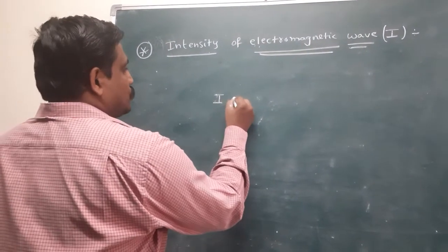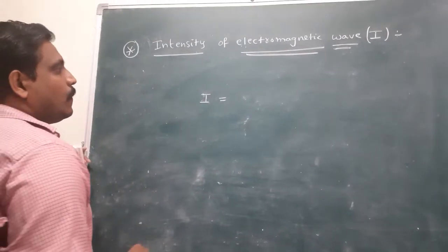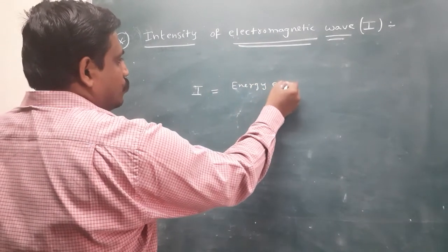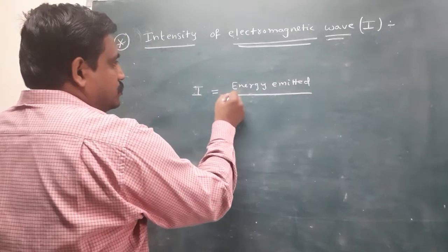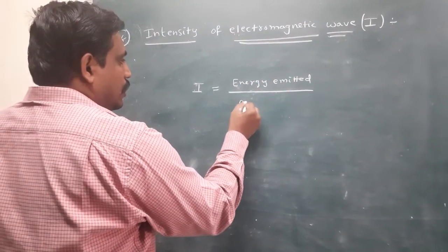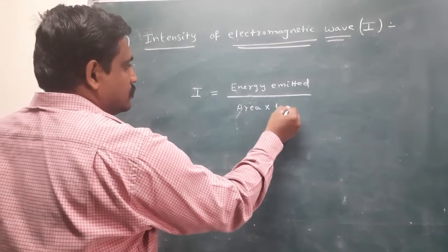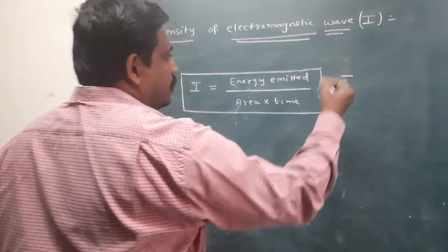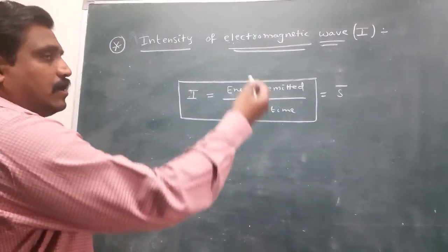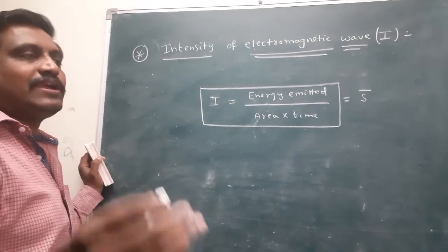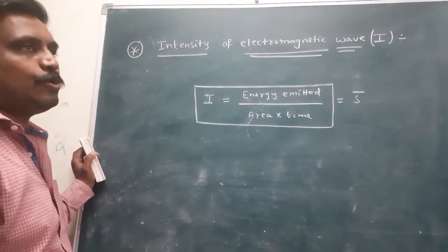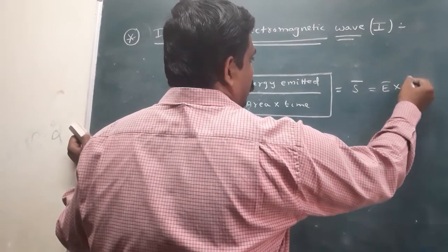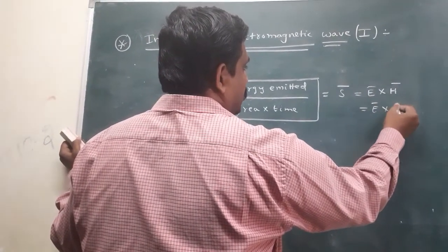Intensity is denoted by I. Intensity is nothing but the energy flowing per unit area per unit time. This is the basic definition. This is also called the Poynting Vector in this chapter. The Poynting Vector indicates the direction of propagation of the electromagnetic wave. The formula for S-bar is E-bar cross H-bar — all are vectors.